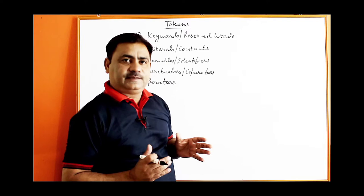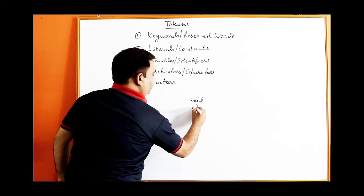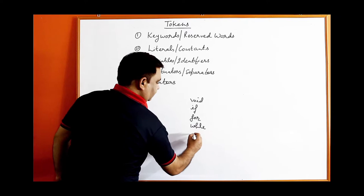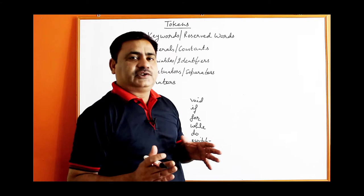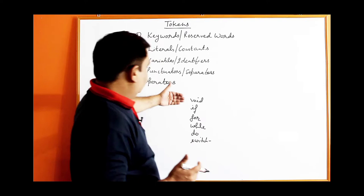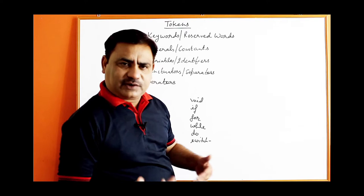Examples of keywords include: void, if, for, while, do, switch. There are more than 50 keywords provided by Java. You have to learn these keywords while writing programs — you should know the specific meaning of each keyword, and you can learn them easily step by step when you start programming.